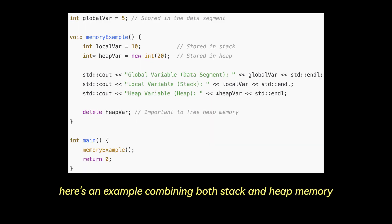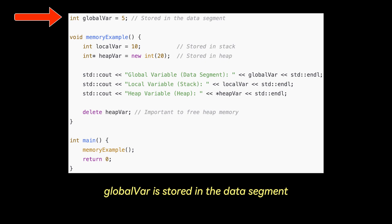Now here's an example combining both stack and heap memory, which illustrates how different kinds of data live in different parts of memory. Global var is stored in the data segment because it's a global variable.